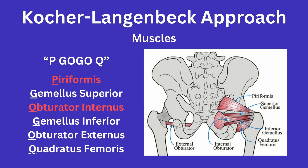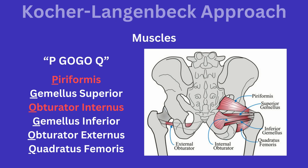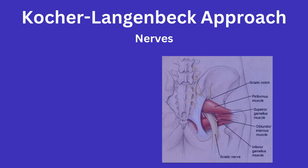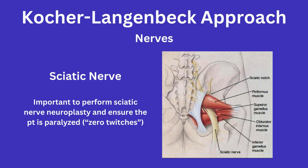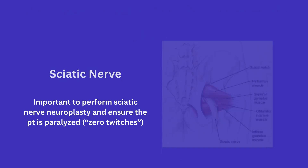Laterally, you will be incising through the tensor fasciae latae. Nerves. The major nerve to protect is the sciatic nerve, which runs either inferior to or through the piriformis muscle. You may see the surgeon bend the knee to relieve tension on the sciatic nerve. Ensuring that a sciatic neuroplasty and zero twitches are achieved are important factors for this procedure.